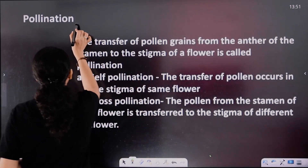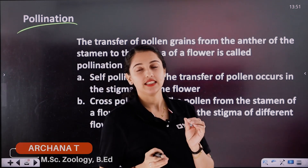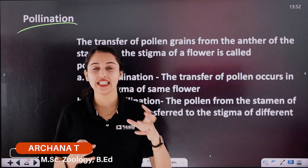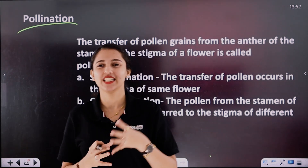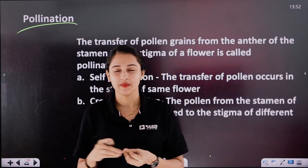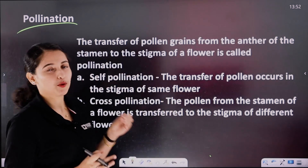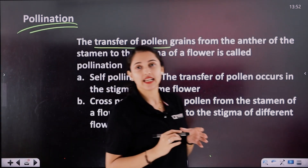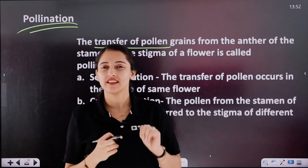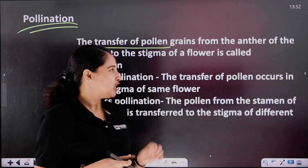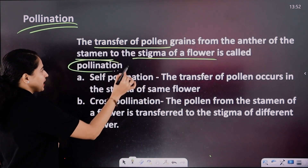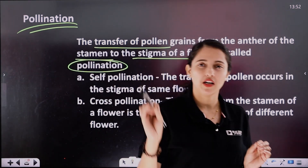In our next topic, pollination. Pollination is called a reproductive system. Pollination is the transfer of pollen grains from the anther of the stamen to the stigma of a flower. So pollination is simply the transfer of pollen grains to the stigma.